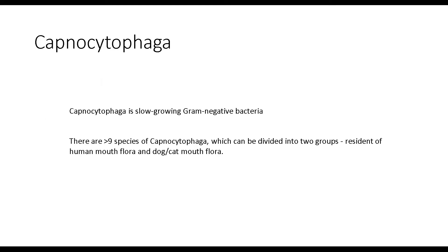Capnocytophaga is a slow-growing gram-negative bacteria. There are more than nine species of Capnocytophaga, which can be divided into two groups: residents of human mouth flora, and residents of the mouth flora of animals like dogs and cats.